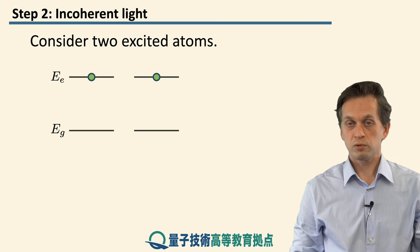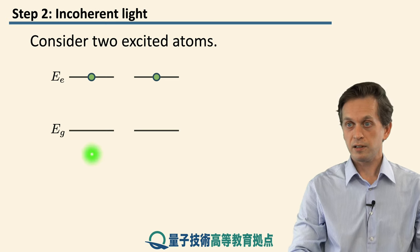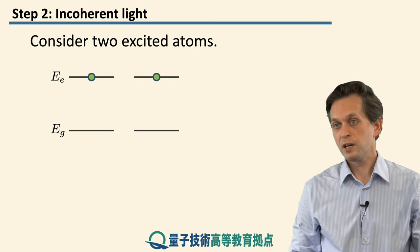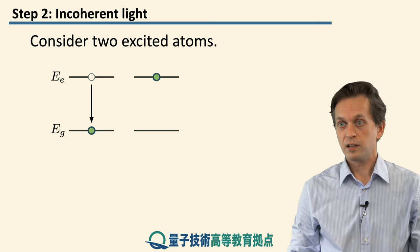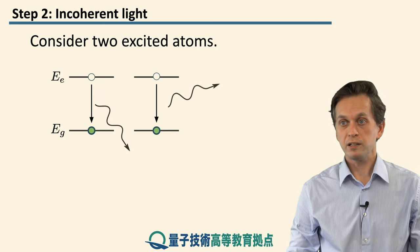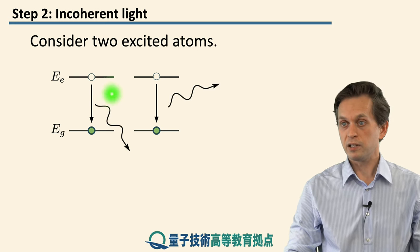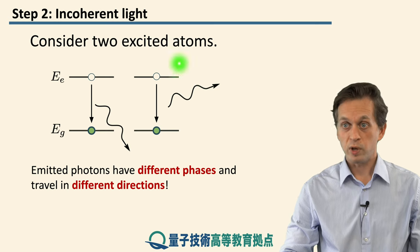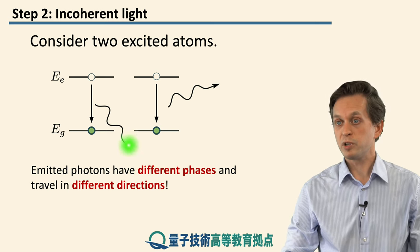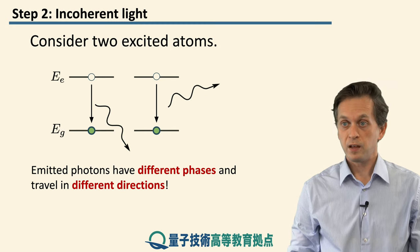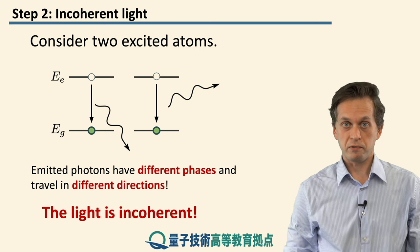Now let's consider two such excited atoms. They're both sitting in their excited states, EE and EE. If we wait some time, one of them de-excites into its ground state, and so does the other one. While this happens, both of them give out light, and this light is traveling in some random directions and also at some random phases. So the two photons have different phases and different directions of travel. When this happens, we call such light incoherent light.